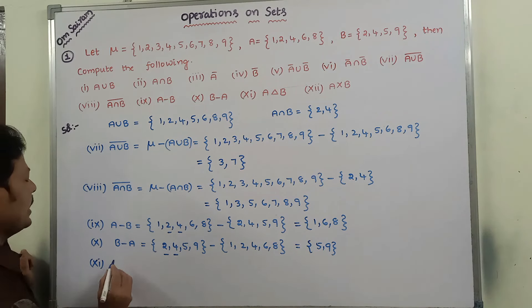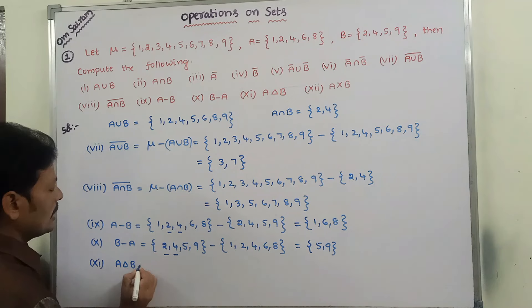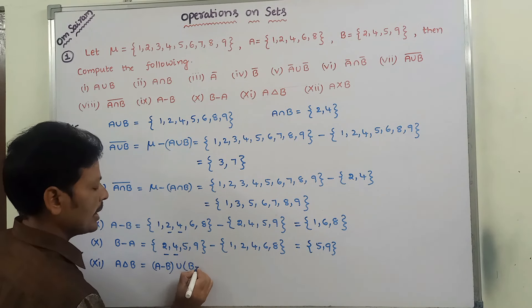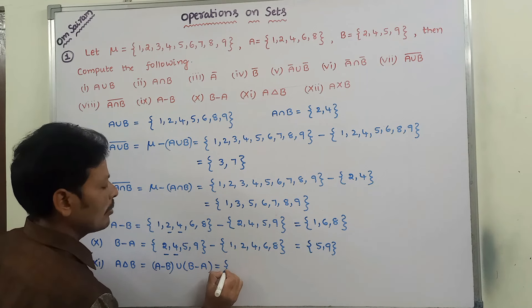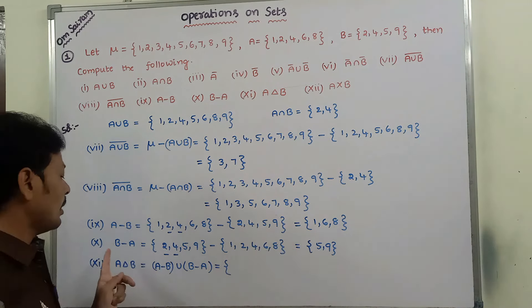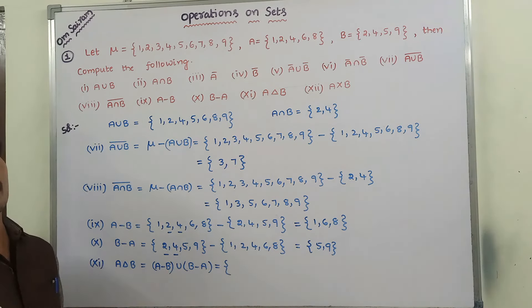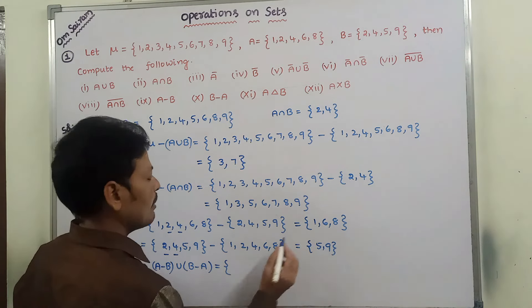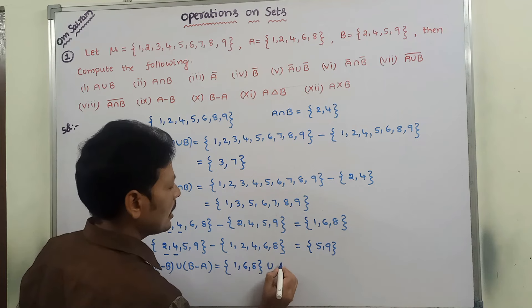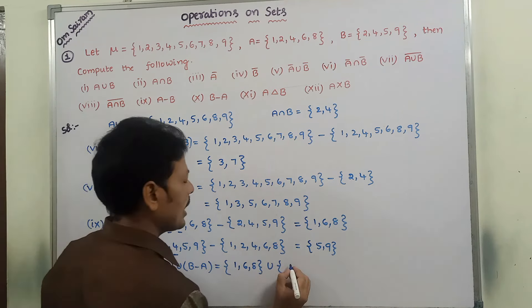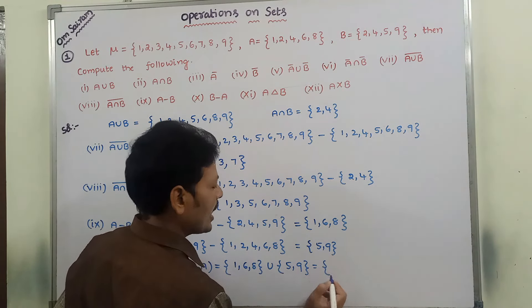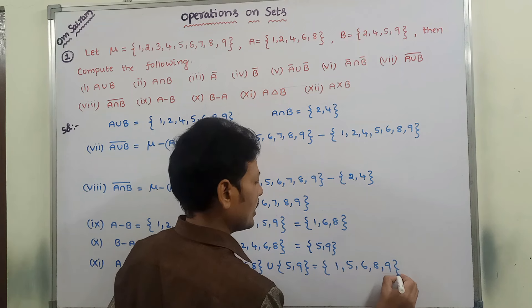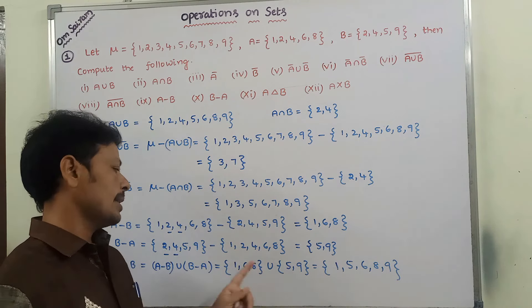Eleventh, A delta B (symmetric difference). The formula is A delta B = (A minus B) union (B minus A). A minus B = {1, 6, 8} and B minus A = {5, 9}. Combining these: A delta B = {1, 5, 6, 8, 9}.